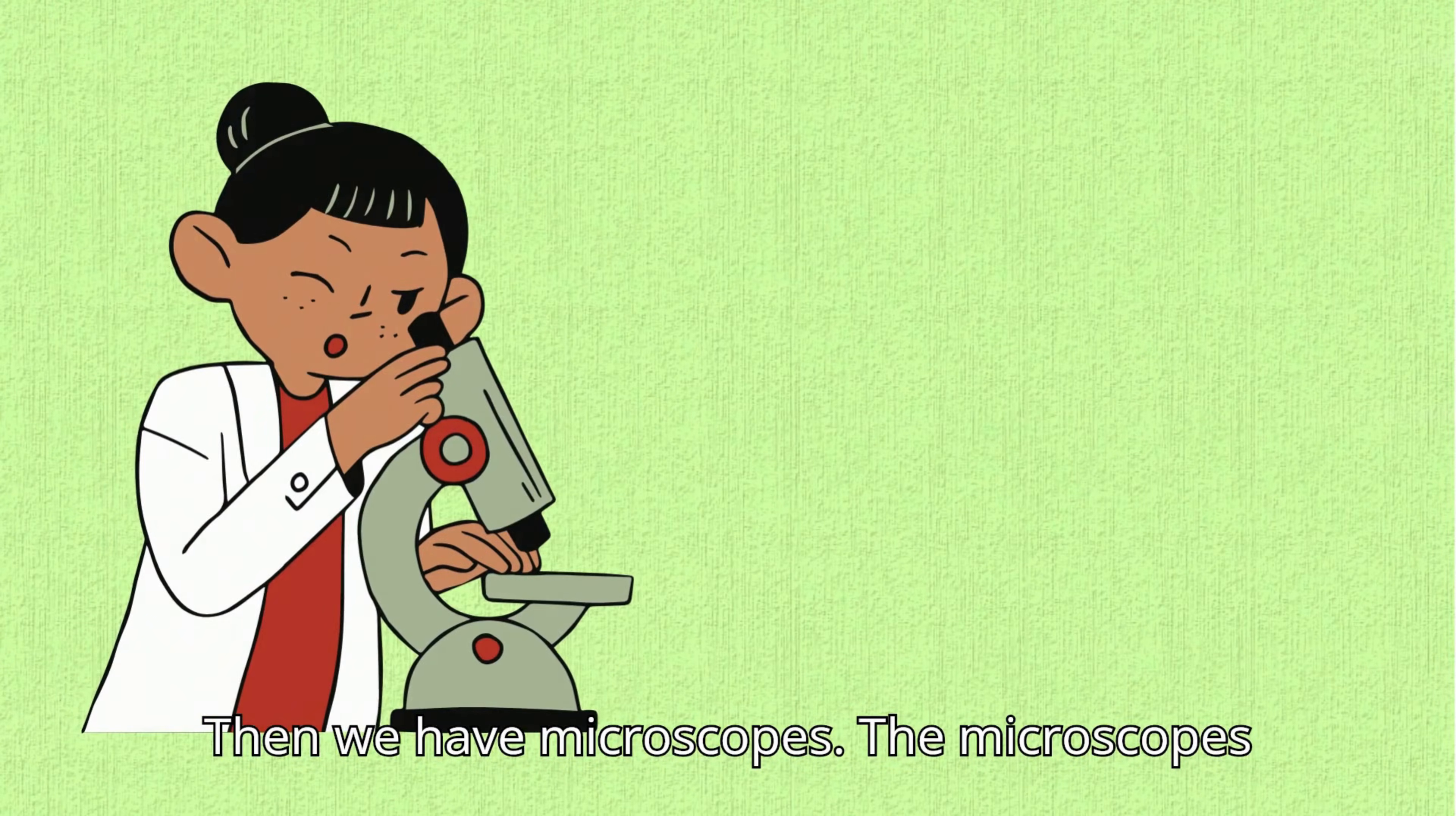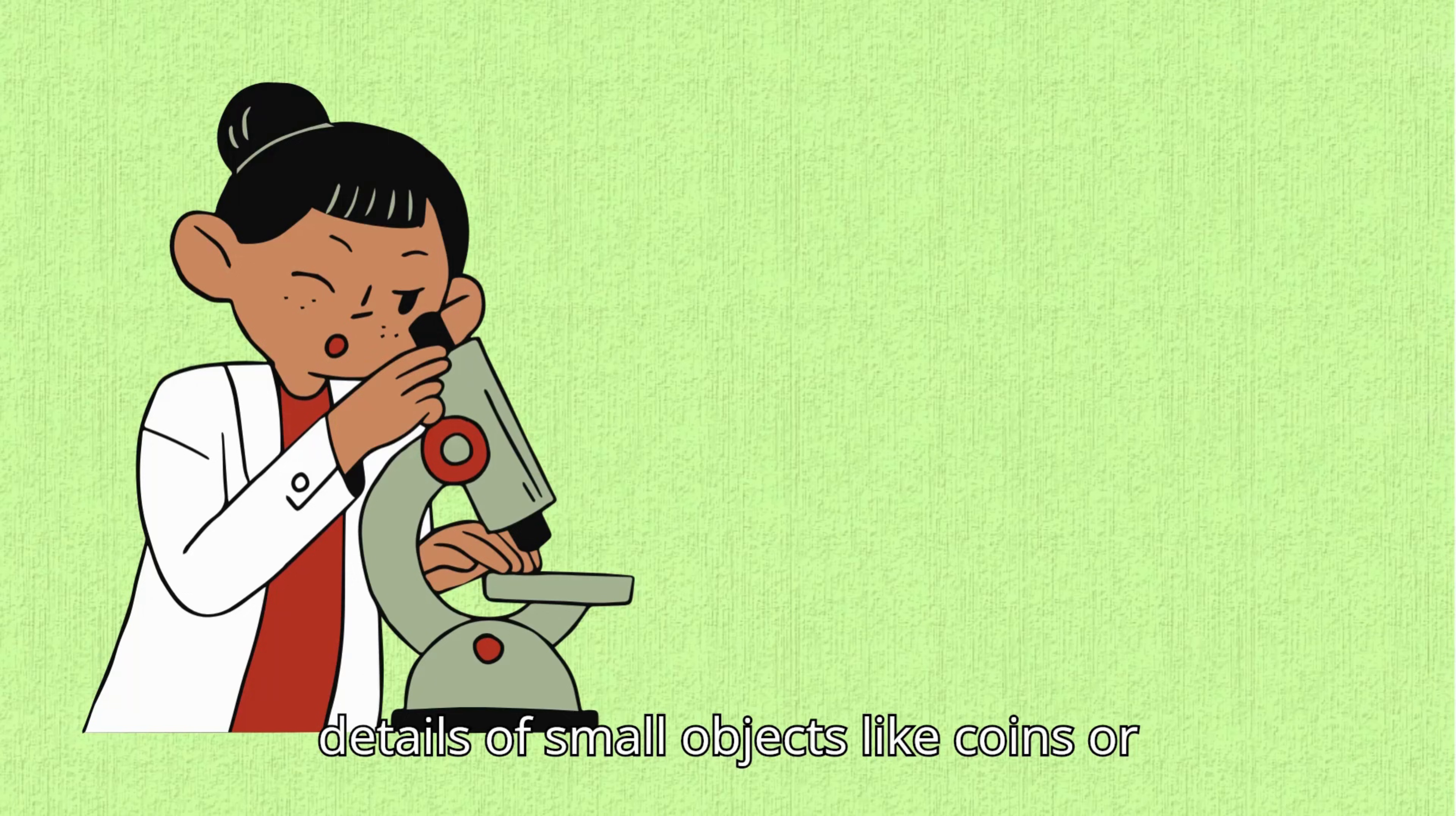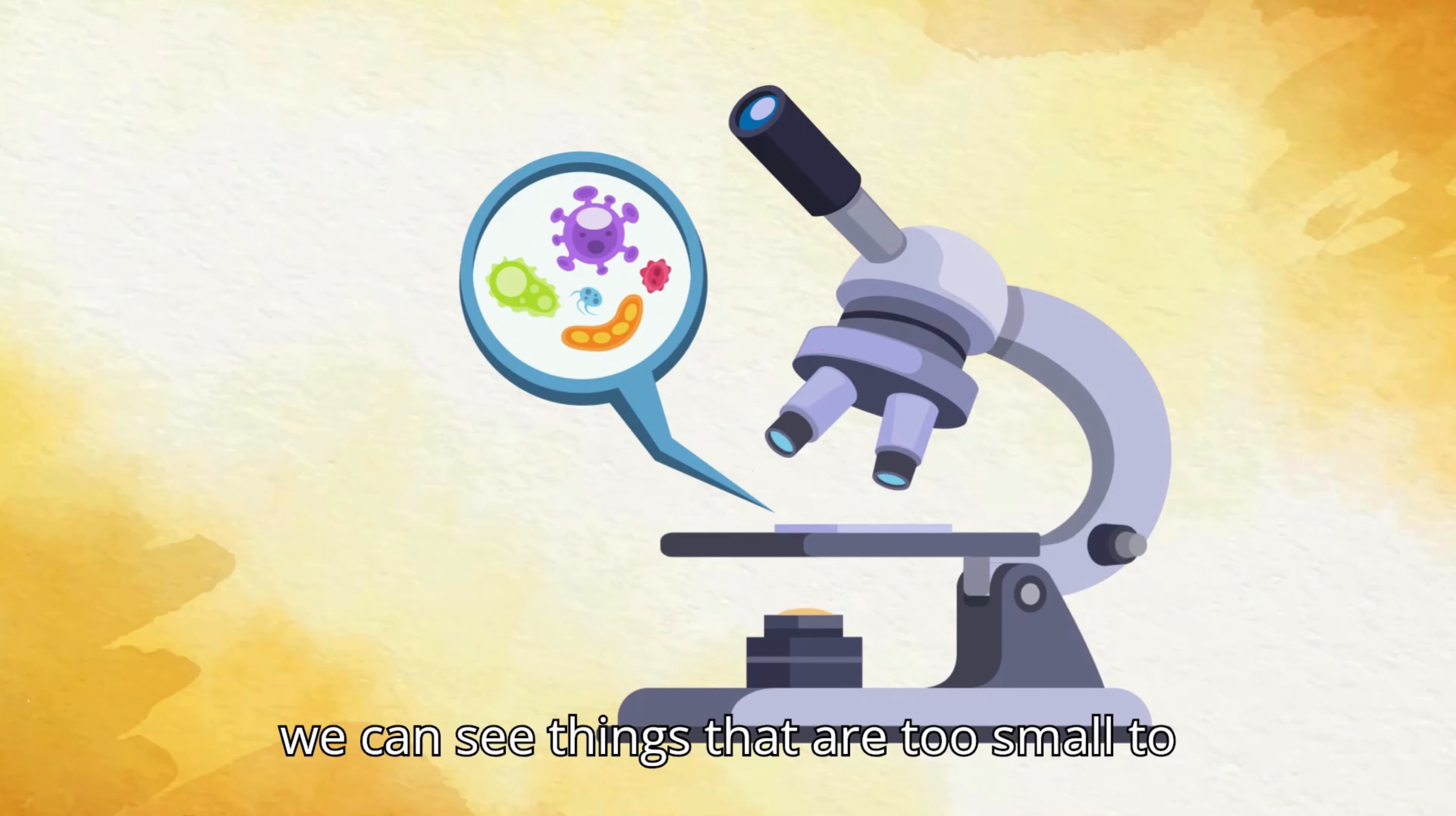Then we have microscopes. Microscopes are special tools that help us see really small things like tiny cells, microorganisms, the structure of cells like plant cells or animal cells, or the details of small objects like coins or jewelry. They work by magnifying objects using a combination of lenses and light. With a microscope, we can see things that are too small to see with our eyes alone.